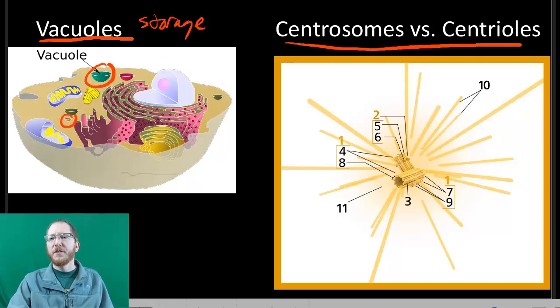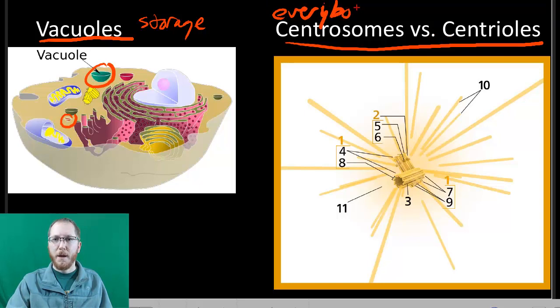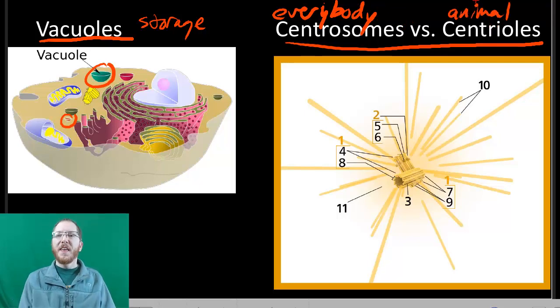Now, the very last thing we've got for this section is centrosomes and centrioles. Here's the trick. Everybody has centrosomes. Centrioles are only found in animal cells. Now, even without centrioles, the centrosome still does the job, so you don't need centrioles.